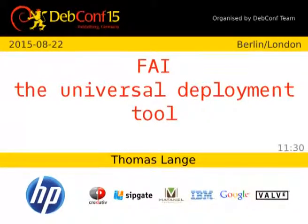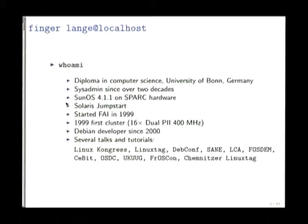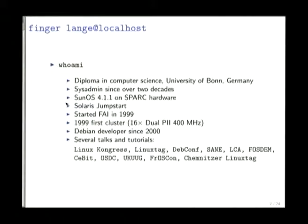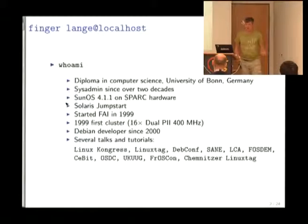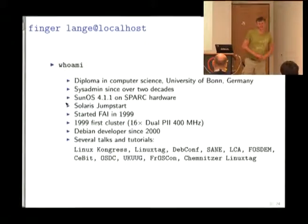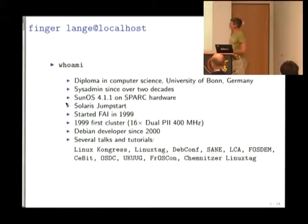My name is Thomas Lange, working at the University for a very long time. I started with Sunrace, where there was something called Jumpstart — an automatic installation tool I used for several years. It wasn't that good, so I made some extensions to it. In 1999 we had to install a cluster, and since I'm very lazy, I wanted something automatic. At that time there was nothing in Debian, so we started the Fully Automatic Installation project.